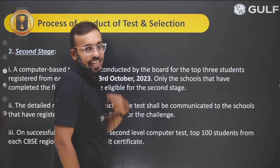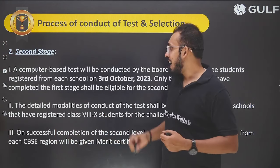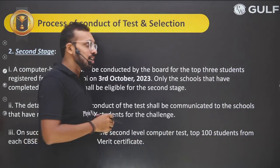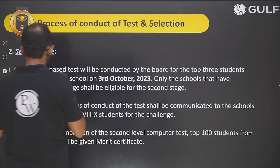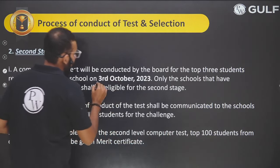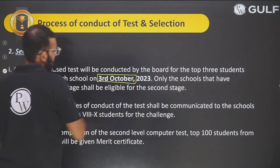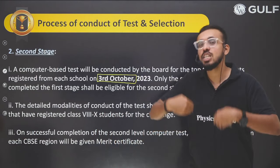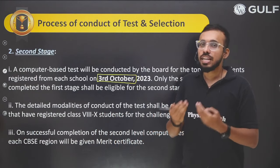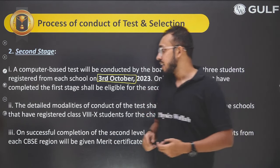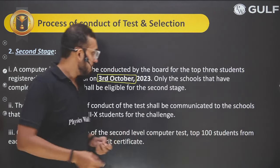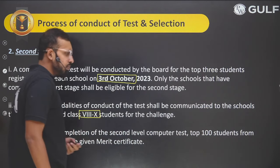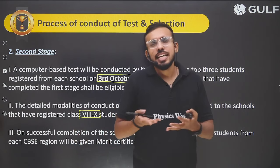After the payment is done, the second round begins. Level 2 is a Computer Based Test (CBT) and will be held on 3rd October 2023 — the day after Gandhi Jayanti. The test will again be conducted in your school premises itself, and it is for students of Classes 8 to 10 only.